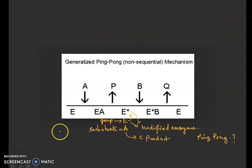For example, you take one example. There is an enzyme and it is interacting with a substrate A. After the substrate binds with E, it will make some change in the conformation or modifying the enzyme. After that it will be converted to E star, a modified enzyme.